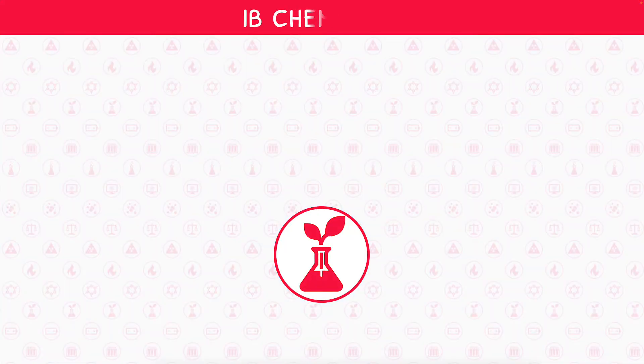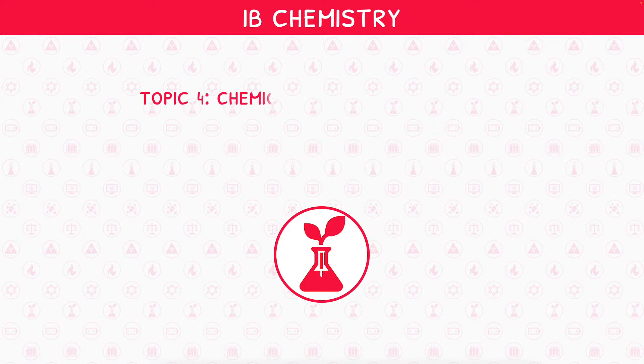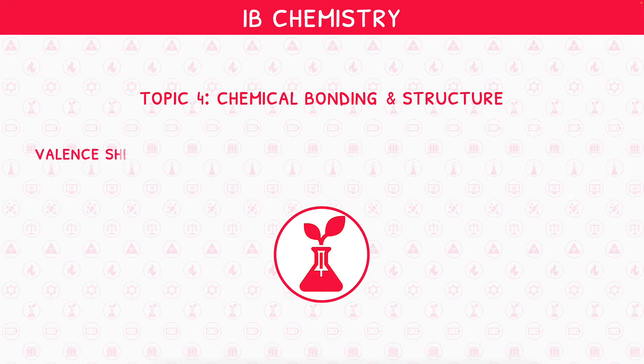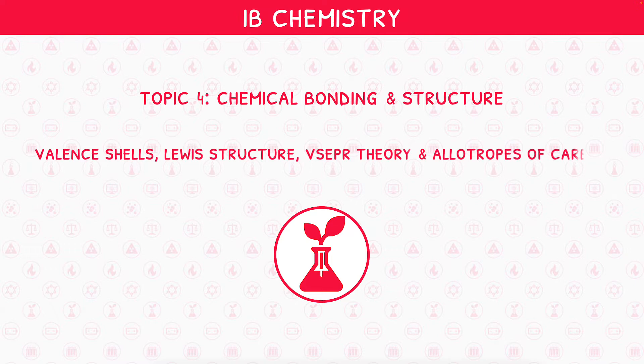Welcome back to our IB Chemistry video series. This is the second video in IB Chemistry Topic 4, Chemical Bonding and Structure, where we will be looking at valence shells, Lewis structures, the VSEPR theory, and allotropes of carbon.